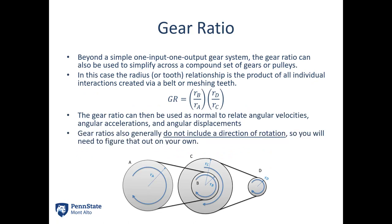It's important to note that gear ratios generally do not include the direction of rotation — you need to figure that out on your own. For a pulley driven system it's not a big deal since everything rotates in the same direction, but with a string of meshing gears, every mesh reverses the direction, so you need to think through whether the final output is clockwise or counterclockwise. That's all for today's video lecture — thank you for watching and I hope to see you again.